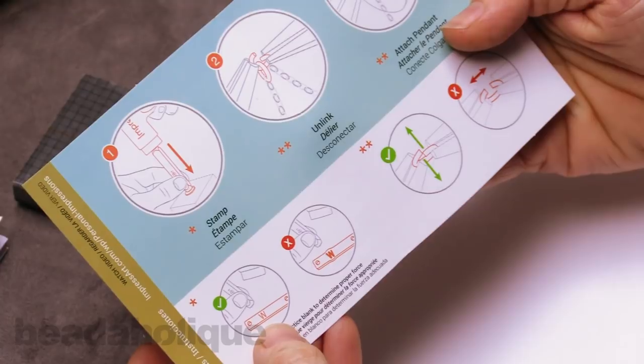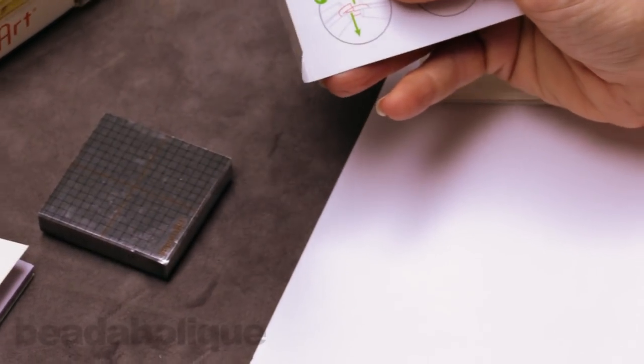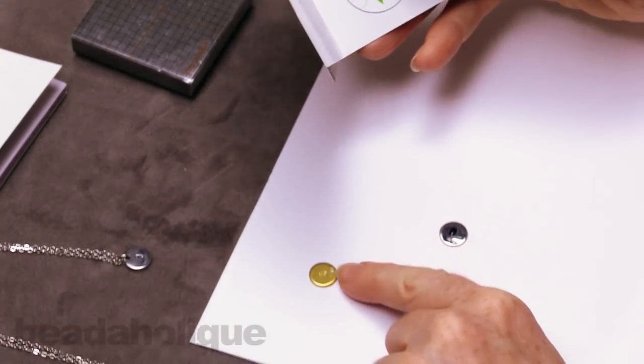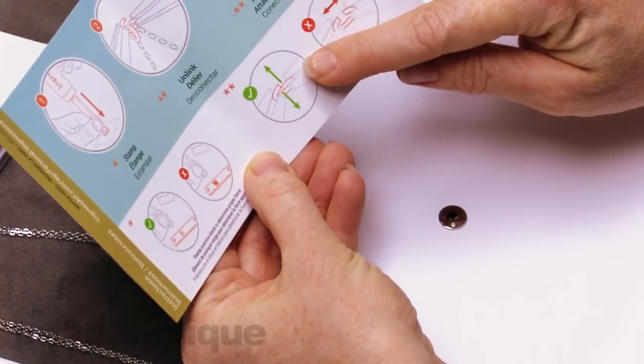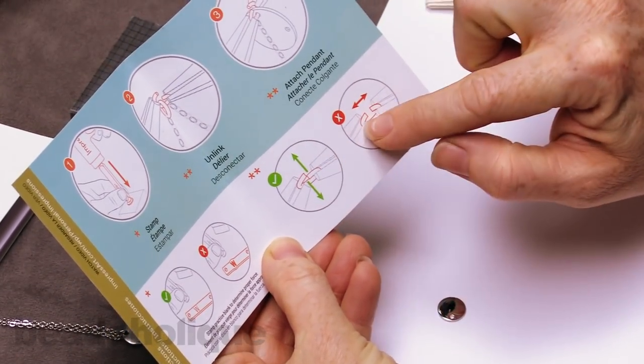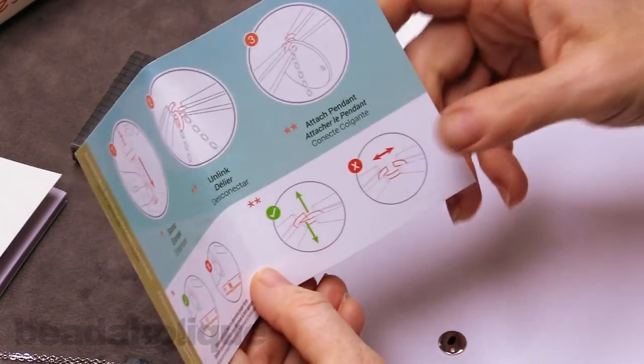It's also going to give you a little tip about the amount of force you use. So that's why they give you this little sample blank. So if you've never done stamping before, you can go ahead and practice how hard you want to hit it. And also a little guide about how you properly open and close the jump ring. So if you are considering giving this as a gift, it's really nice that it comes with instructions.